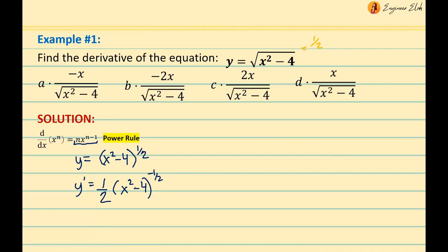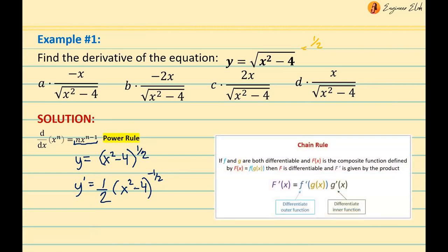But we're not done yet, because we also have the chain rule. If you have an outer function and an inner function, you must differentiate both. We've differentiated the outer function using the power rule, but we still need to differentiate the inner function x squared minus 4. Multiplying by its derivative: the derivative of x squared is 2x by the power rule, and the derivative of negative 4 is zero by the constant rule.